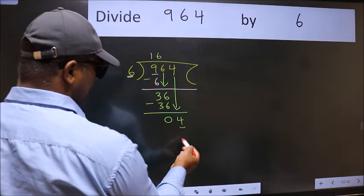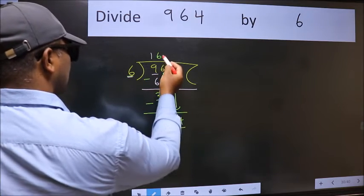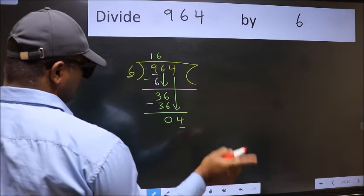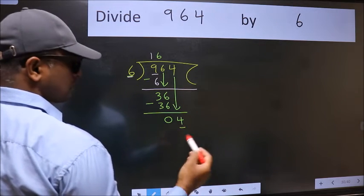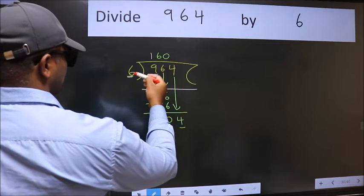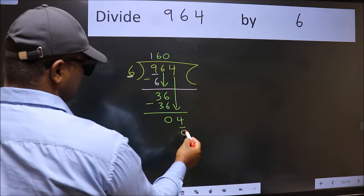Which number should we take here? If I take 1, we will get 6, but 6 is larger than 4. So what we do is we take 0. So 6 into 0 is 0.